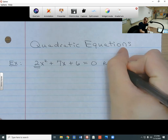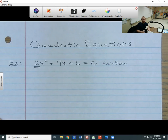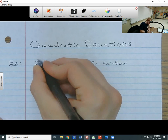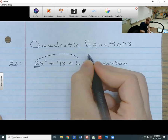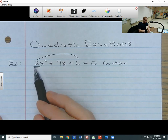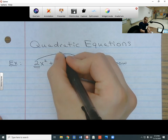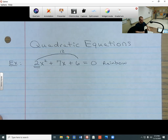The rainbow method involves drawing a rainbow from the first number to the last number. So I'm going to draw a rainbow from this 2 all the way over to this 6. Now whatever numbers the rainbow hits, you have to multiply together. So 2 times 6 is going to give me 12. And I put that at the top of my rainbow. So 12 is going to be called my rainbow number, and that's the number that I have to multiply to eventually.